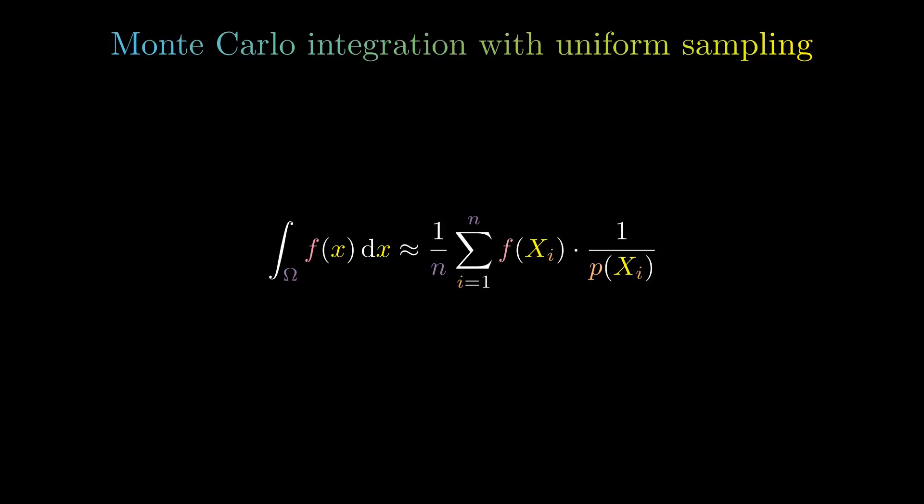Now substitute the constant density function of the uniform distribution, which is the reciprocal of the volume of omega. Finally, simplify algebraically.